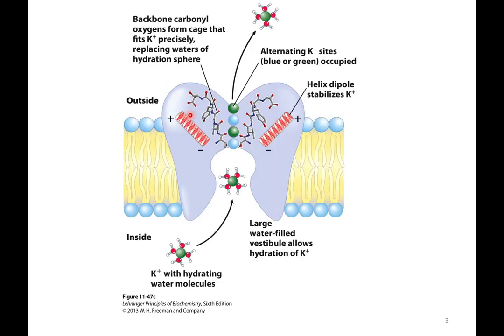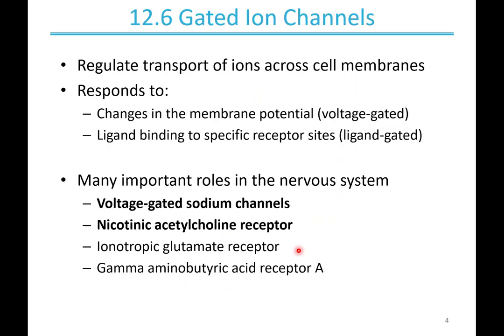We've talked about an ion channel before when we discussed transport through membranes — that was the potassium ion channel. In that channel we had helices with a dipole that led ions in the right direction, and a selectivity pore where only potassium ions can fit and get the hydrogen bonding interactions. That's an example of a channel that's always open, but today we're going to talk about those that are gated.